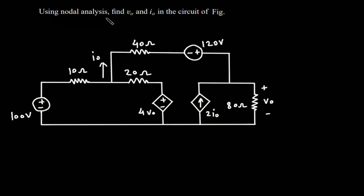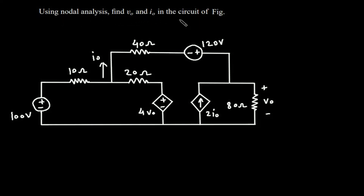Using nodal analysis, find VO and IO in the circuit of the figure. We have to find VO and IO in this circuit.